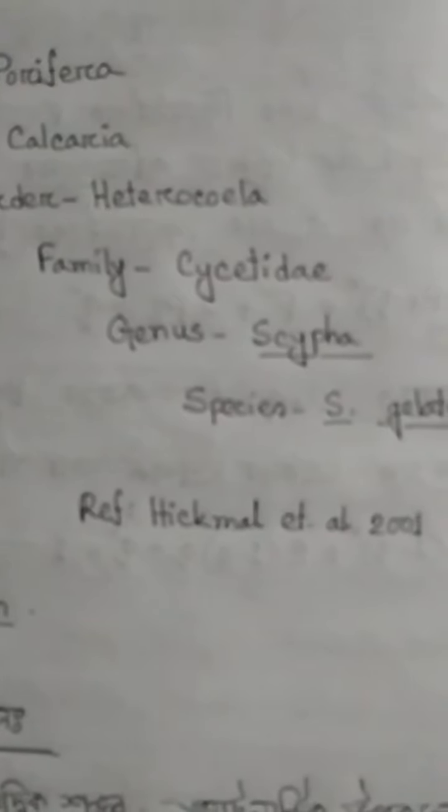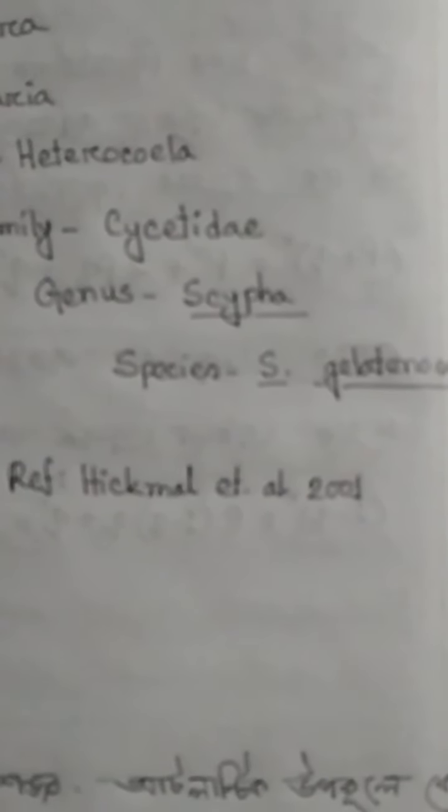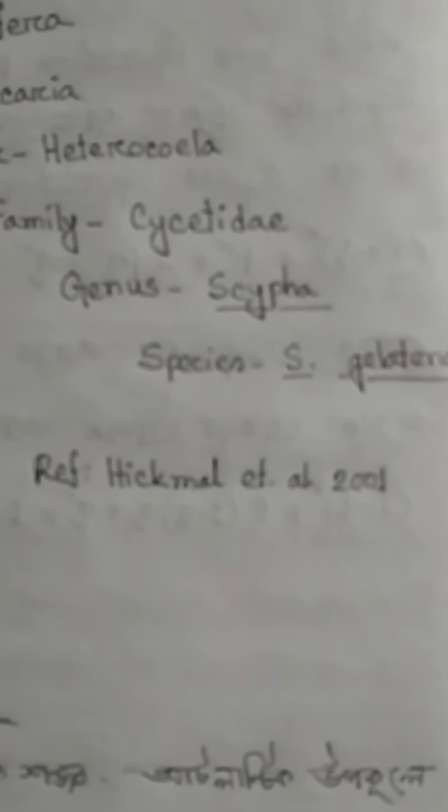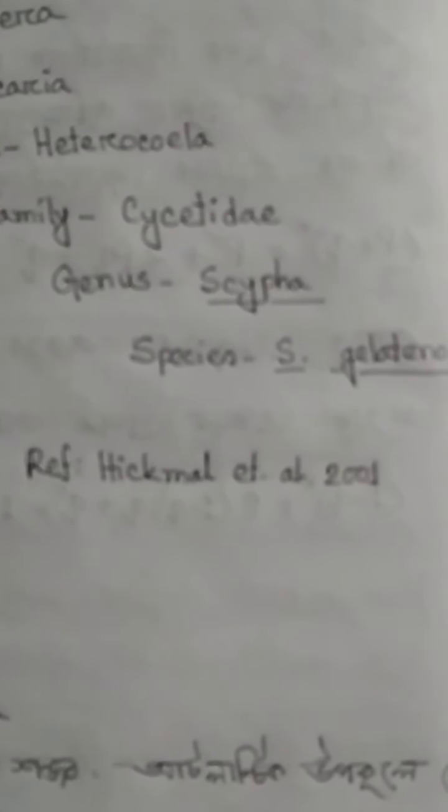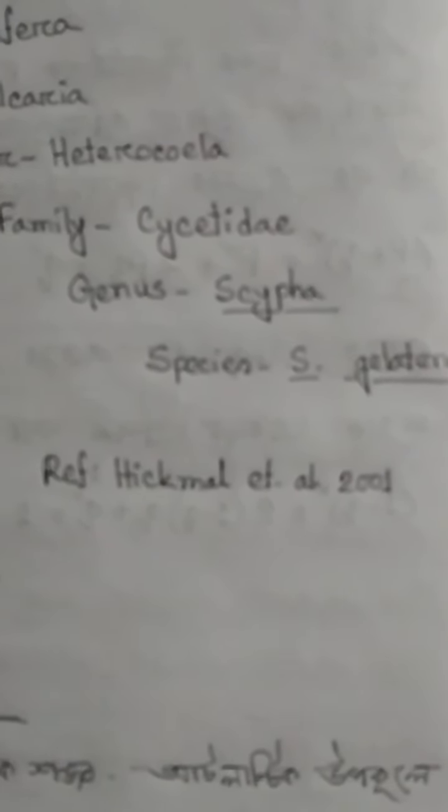In Scypha, this is the size — which is the type of species. If you want to see this, you can see the underlines. This is the type of species. The reference is Hickman et al. 2001, page 190. If you want to see which animal's systematic position, you can see the reference.